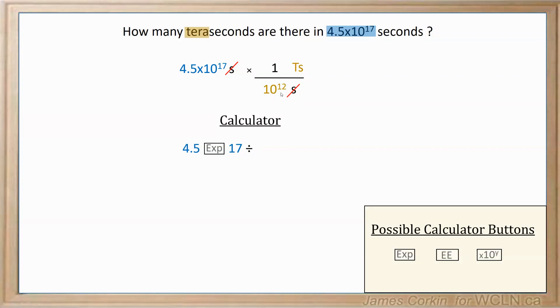Then because the 10 to the power of 12 in our fraction is on the bottom, we're going to divide. We're going to put in our calculator 1 EXP 12. Another quick aside on this, 10 to the power of 12 is the exact same number as 1 times 10 to the power of 12.